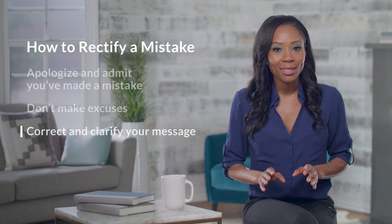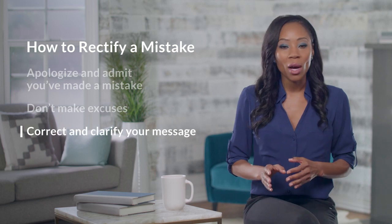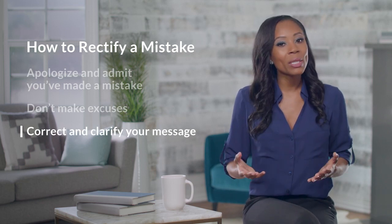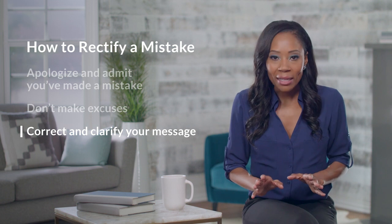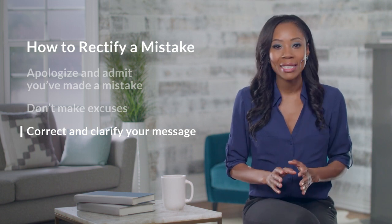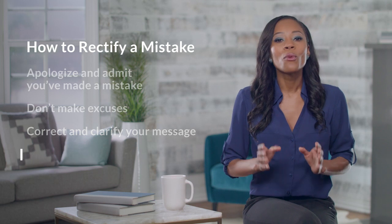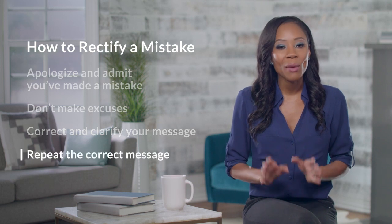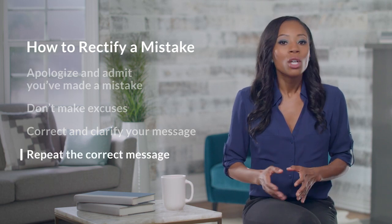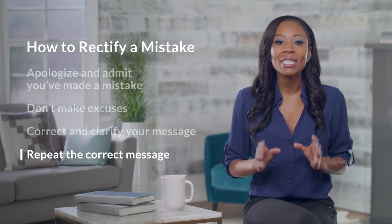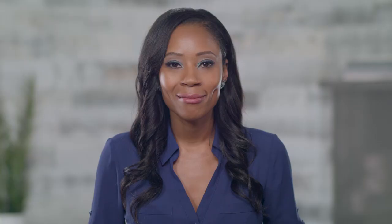After you've apologized, you'll then want to correct and clarify your message. Give more details, expand your point, and make sure everyone is clear before you move on. Finally, repeat the correct message. That way, you'll remove any doubt and make sure your listeners leave with the right takeaway. So, that's rectifying a communication mistake.